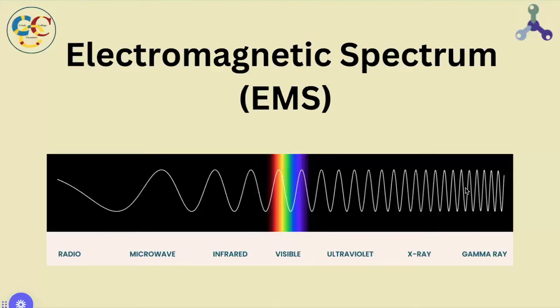The electromagnetic spectrum, or EMS for short, is the full range of what light could be based on a combination of specific variables.